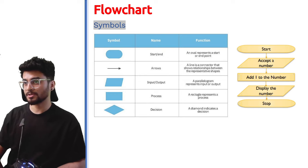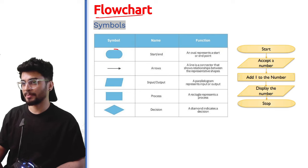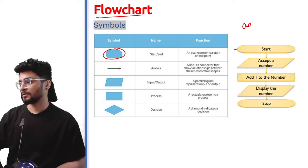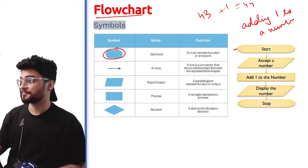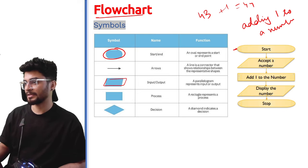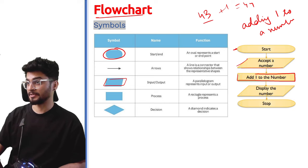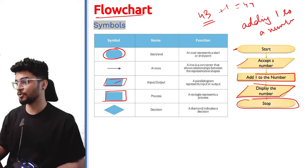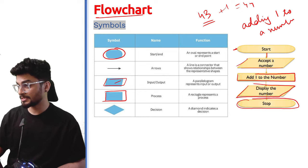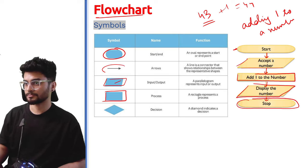Some symbols used in a flowchart: start and end use an oval shape. Here is an example flowchart for adding one to any number — for example adding one to 43 gives 44. You start, then accept a number using an input parallelogram, then process — adding one to the number — shown with a rectangle, then display the result using an output parallelogram, and finally stop the program using an oval. Arrows connect all these shapes.